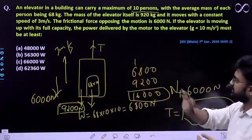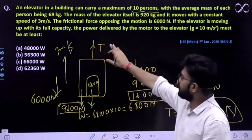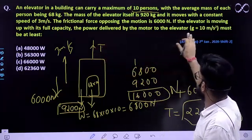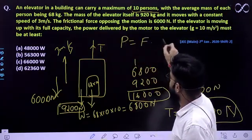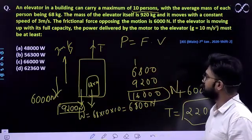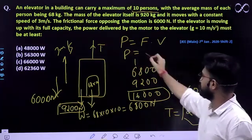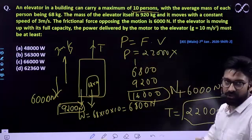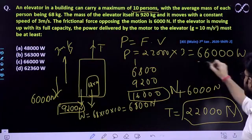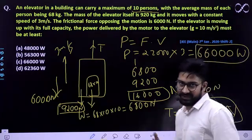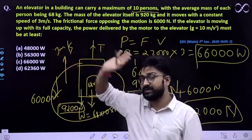Now what is asked? It has to go at constant speed. So the power delivered in moving up with full capacity, the power delivered by the motor to the elevator is. Now how much power will be delivered? What is power? Force applied multiplied by velocity with which it is moving. So force which is maximum required to lift this is 22,000 multiplied by velocity. Velocity is 3. So it comes out to be 66,000 watt. So this would be the power required to lift all these above with a speed of 3 meter per second.